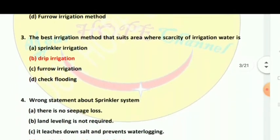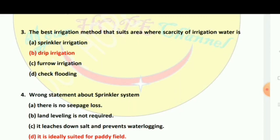Next: The best irrigation method that suits an area where there is scarcity of water is drip irrigation. In drip irrigation, water is dropped directly to the root zone of the soil, so you can stimulate crop growth. When water scarcity exists, the best irrigation method is drip irrigation.